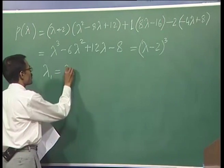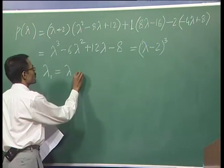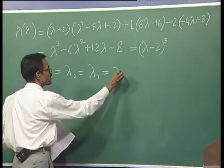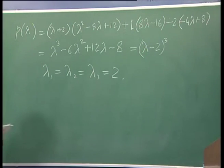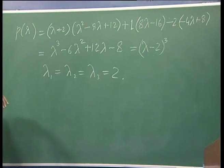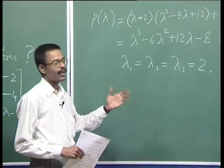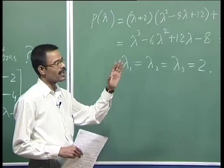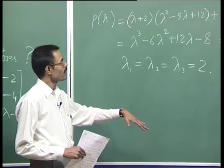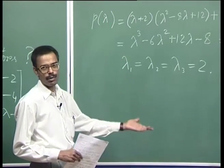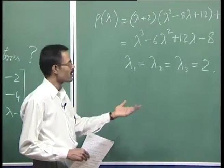So we have lambda 1, lambda 2, lambda 3 all equal to 2. This is a very special case. For this eigenvalue we would like to find the eigenvectors. It would be nice if we can find three linearly independent eigenvectors, but it may be possible that we find only two or only one.